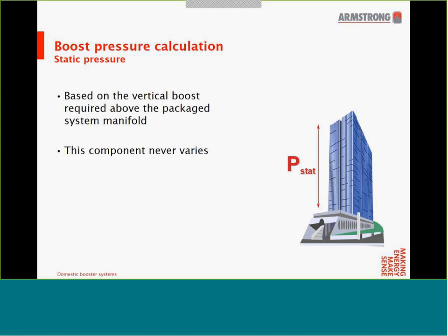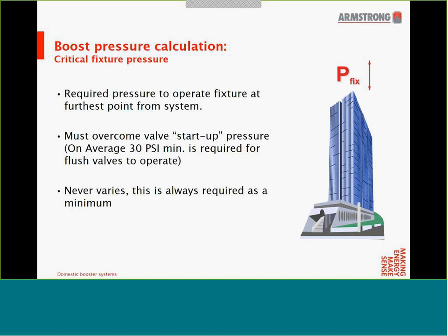After determining the flow, the second step is to determine the boost pressure required. There are five components to calculating the boost pressure. The first is the static pressure, determined by the vertical boost required to bring the water to the top floor — this component doesn't vary. The second component is the pressure required to operate critical fixtures at the furthest point from the booster system. Typically, flush valves are the limiting factor, requiring at least 30 psi to operate. This pressure doesn't vary and is required as a minimum.